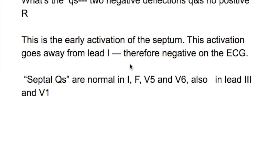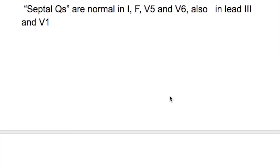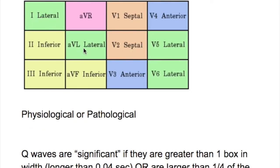Normally, Q waves are seen in leads I, aVF, V5, and V6. They may also be seen in lead III or V1, but in normal cases they disappear on inspiration. If they persist with inspiration, that is abnormal. Leads that do not normally have Q waves are chest leads V2 and V3.